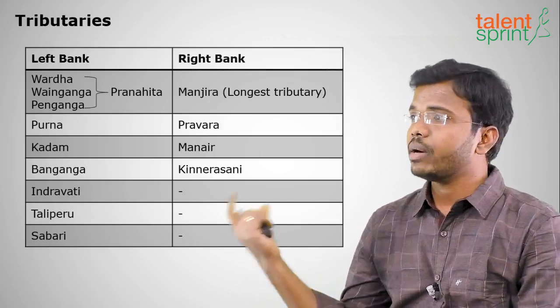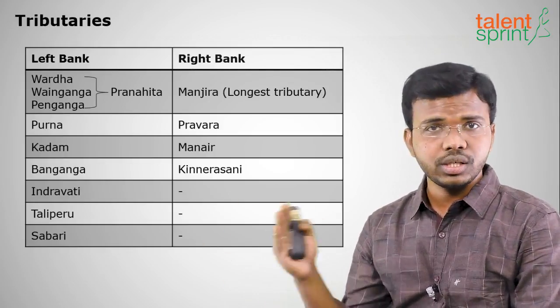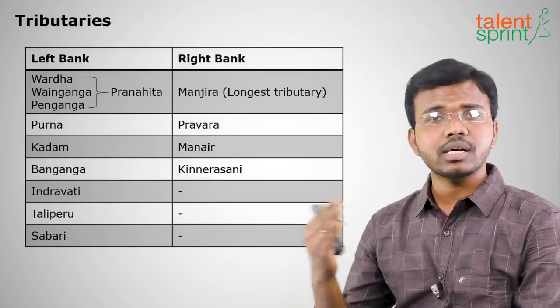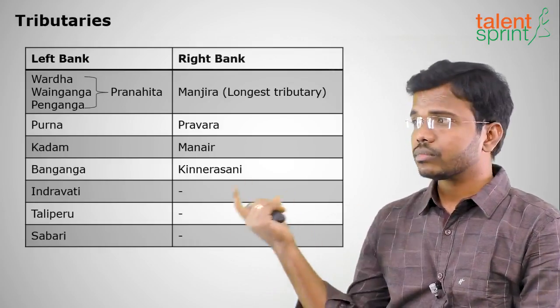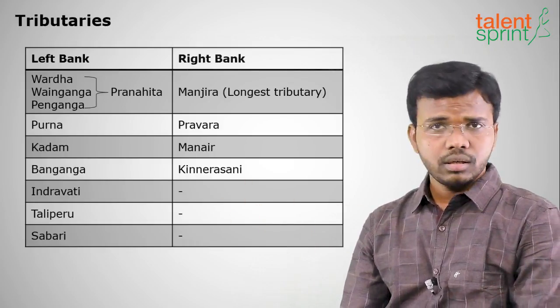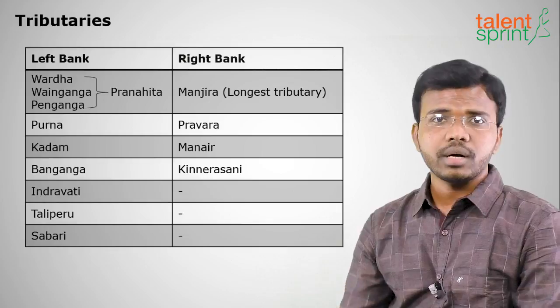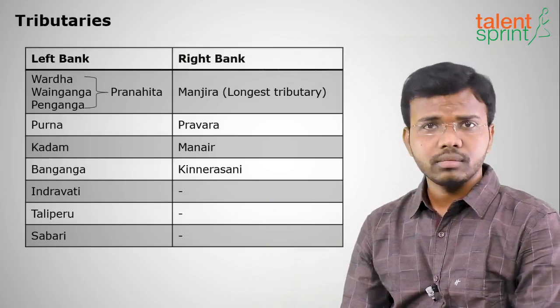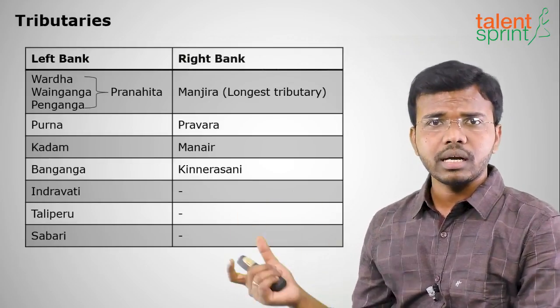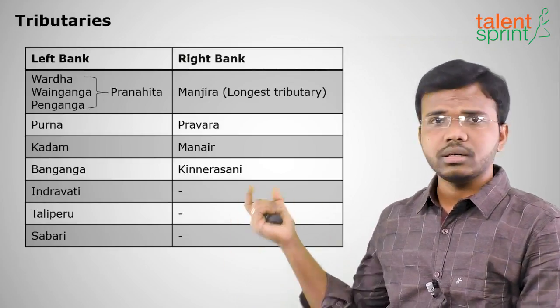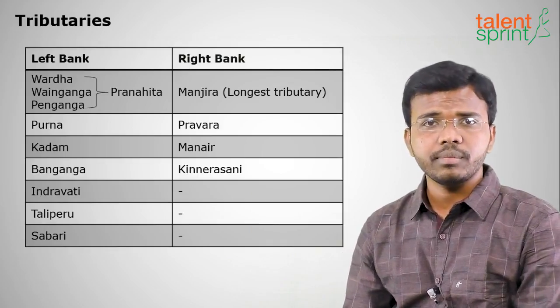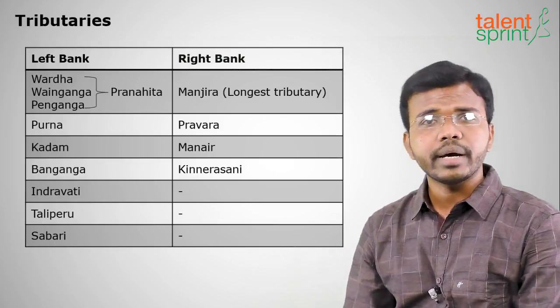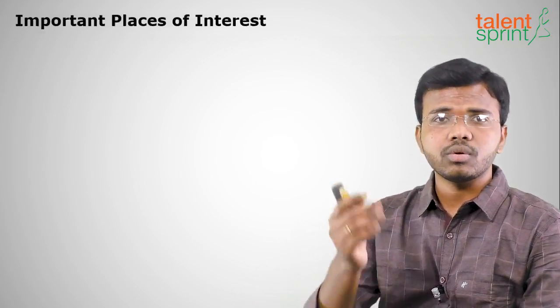The right bank tributaries of the Godavari include Manjira, which is the longest tributary of the Godavari and comes from Karnataka, along with Pravara, Maner, and Kinnarasani. These are the very famous right bank tributaries of the Godavari.